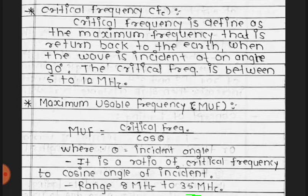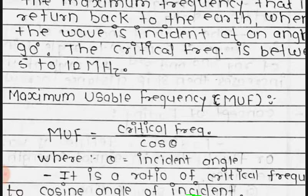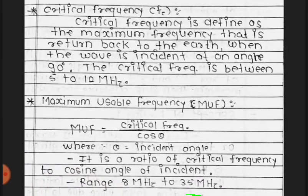Now, maximum usable frequency (MUF). The formula is: MUF = critical frequency divided by cosine theta, where theta is the angle of incidence. It is the ratio of critical frequency to the cosine of the angle of incidence. The range of MUF is 8 megahertz to 30 megahertz. Critical frequency and MUF are very important topics.